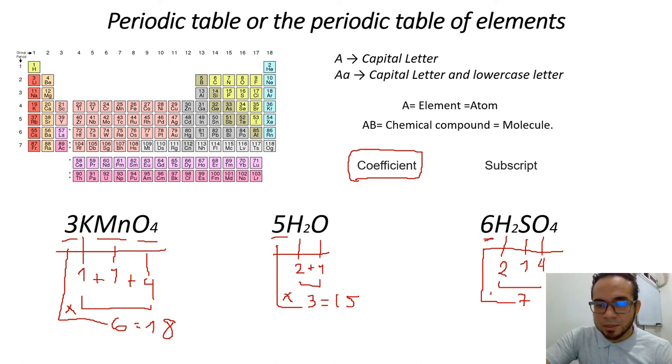But, remember, six times seven is 42. So, we have 42 atoms, or six molecules in this exercise.